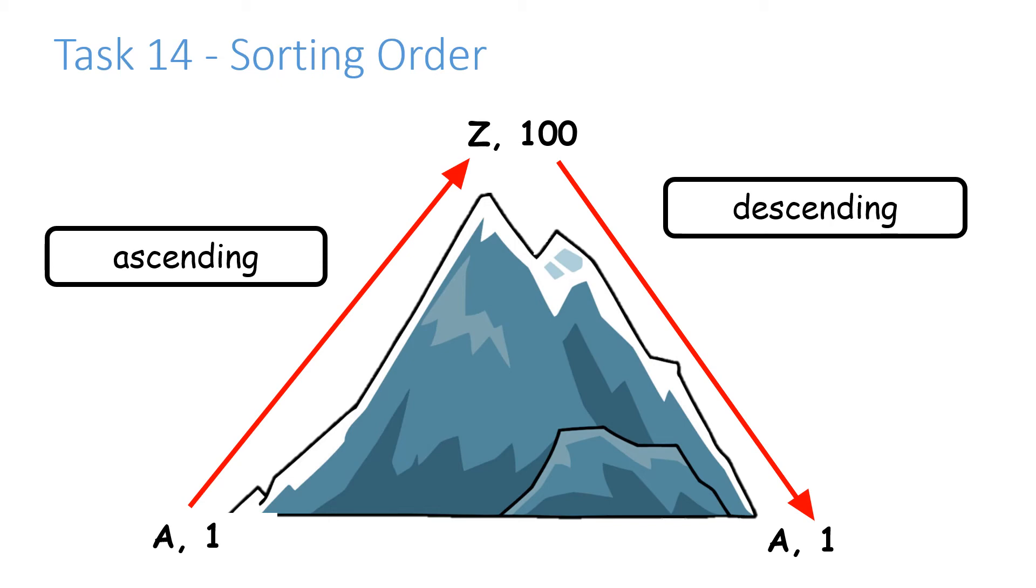Those are the two ways we can sort our information. It doesn't have to be just numerical values, it can go alphabetical, and there's lots of different ways we can do that. Sorting order is ascending and descending. I want you to copy these terms into your task sheet before moving on.